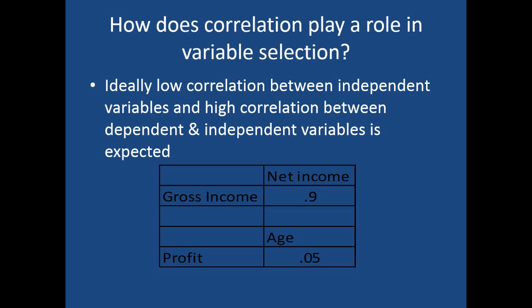For example, if we have two independent variables — net income and gross income — and the correlation between them is 0.9, should we use both? Intuitively, gross income and net income tend to be very similar variables, so they are highly correlated. There is a huge overlap between them, so it is always good to drop one of these variables from the model, because otherwise you are using the same information again and again and making the model more complex.